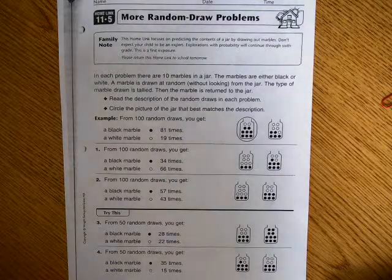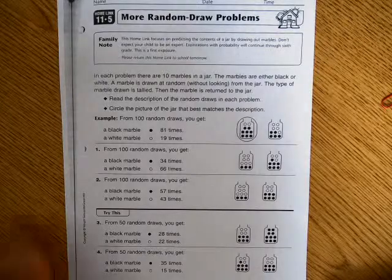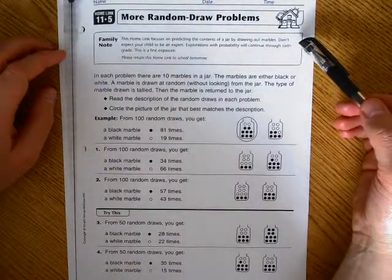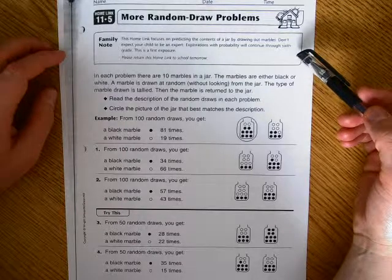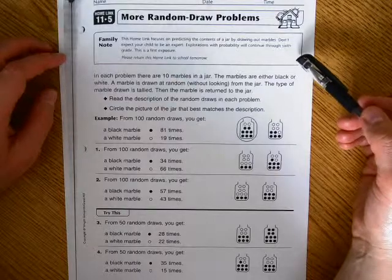This is Homelink 11.5, More Random Draw Problems for Grade 3 Everyday Math. This Homelink focuses on predicting the contents of a jar by drawing out marbles. Don't expect your child to be an expert. Explorations with probability will continue through 6th grade. This is a first exposure.